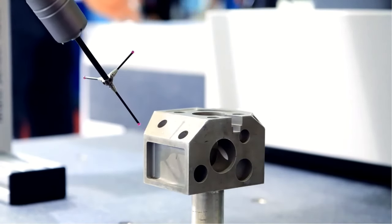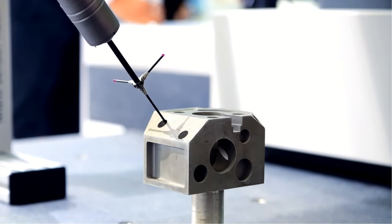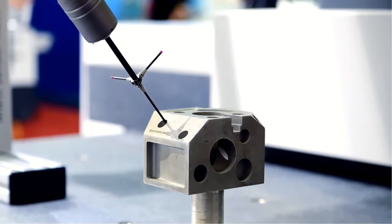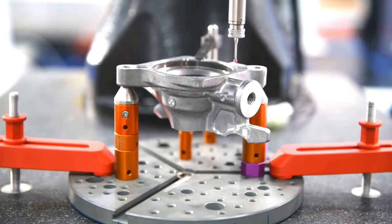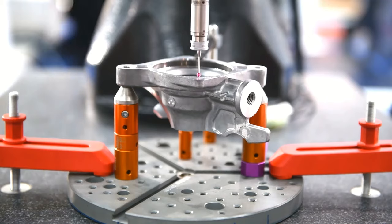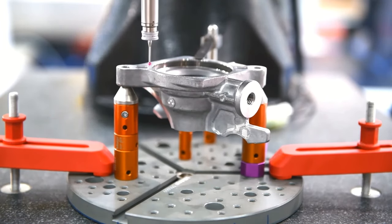For line measurement, you have to choose two points which describe the length. The same thing is applied to plane geometry. First, you have to choose the object plane in CMM software and touch the CMM probe around the boundary of the plane.